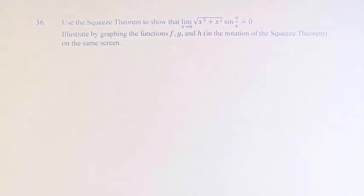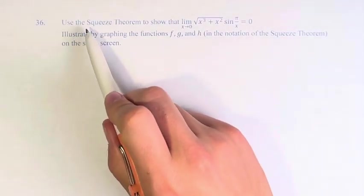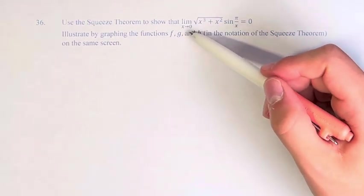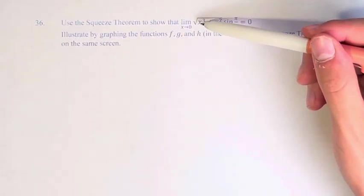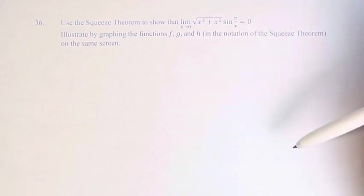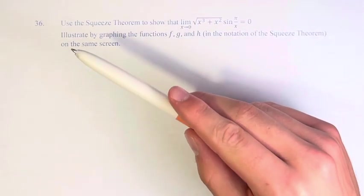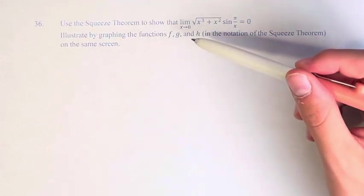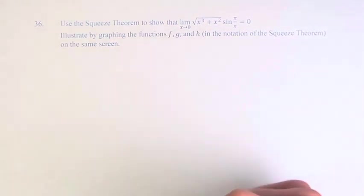Hello and welcome back to another video. In this problem, we're asked to use the squeeze theorem to show that the limit as x approaches 0 of the square root of x cubed plus x squared times the sine of pi over x is equal to 0. We're asked to do this by illustrating the functions f, g, and h in notation of the squeeze theorem on the same screen.